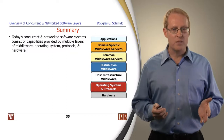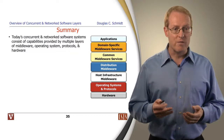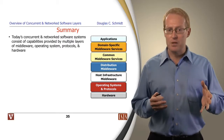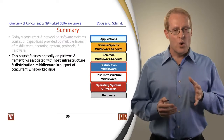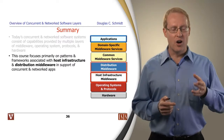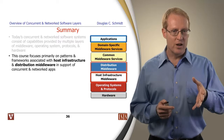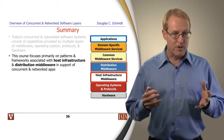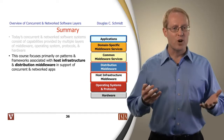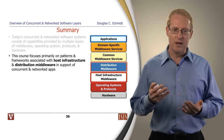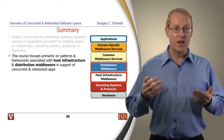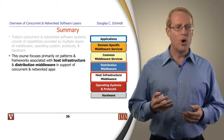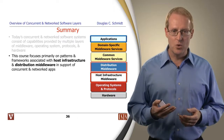To summarize this part of the module, today's concurrent and network software systems consist of capabilities provided by multiple layers of middleware, operating systems, protocols, and hardware. In this course, we are going to focus primarily on host infrastructure middleware and distribution middleware — the areas where concurrent and network programming patterns and frameworks are going to make the biggest impact. Our goal through a lot of this is to demonstrate how to use these layers to either build higher layers like common middleware services or domain-specific middleware, or more likely build applications that can use these capabilities.